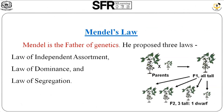Mendel is one of the scientists. The first law is the law of independent assortment, the second law is the law of dominance, and the third law is the law of segregation.